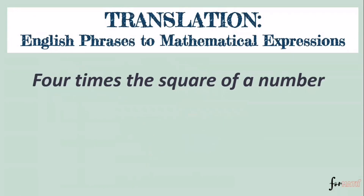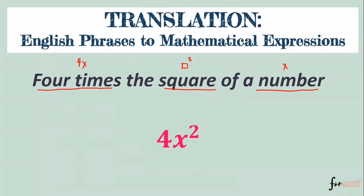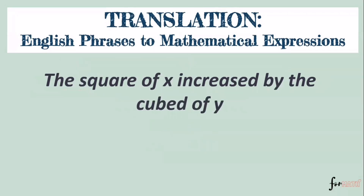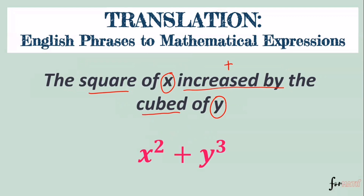Next: 'Four times the square of a number.' A number is x, so the square of a number is x squared. Four times that gives us 4x². Next: 'The square of x increased by the cube of y.' Square of x, increased by — operation is addition — cube of y. The answer is x² + y³.